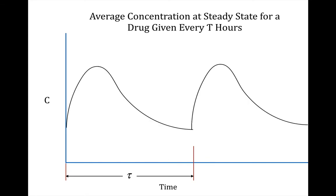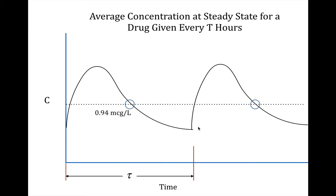Here's what a concentration-time curve might look like for a drug requiring absorption. The steady state average concentration is roughly about halfway through the dosing interval and about half of the difference between the peak and the trough. We predicted it to be 0.94 micrograms per liter.